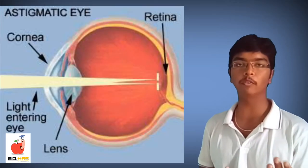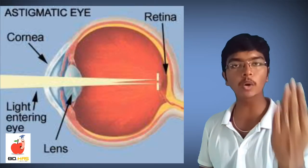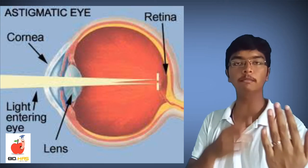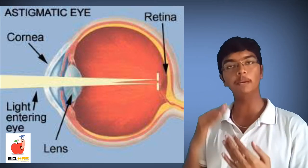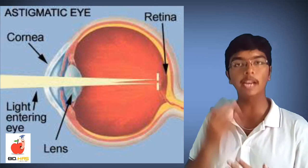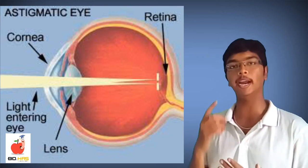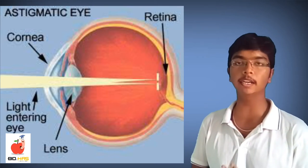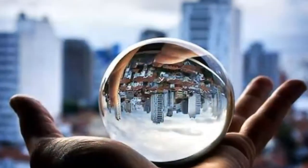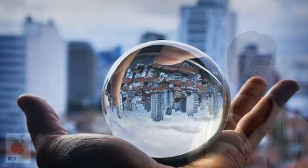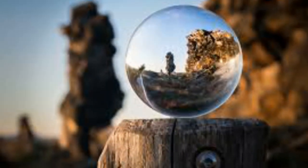For example, when we are focusing on an image, the light from the image will pass through the cornea and it will be adjusted with the help of a lens behind it, forming an upside down image on the retina. When the retina sends these messages to the brain, the brain will turn it into a right way up.